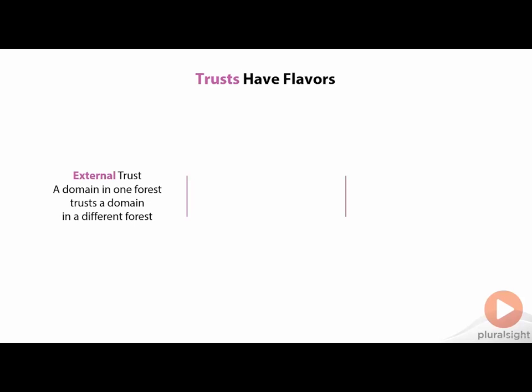The first type is an external trust. It's important to recognize where these trusts actually could exist. Let's assume I have a forest with multiple different domains — an Active Directory forest over here with a bunch of different domains attached together, and then another forest with maybe four different domains. An external trust is any time a domain in one forest trusts a domain in another forest. This external trust is considered external because it extends past the bounds of the original forest, and is generally used to provide access to resources between two different forests where you wouldn't have a forest trust in place.